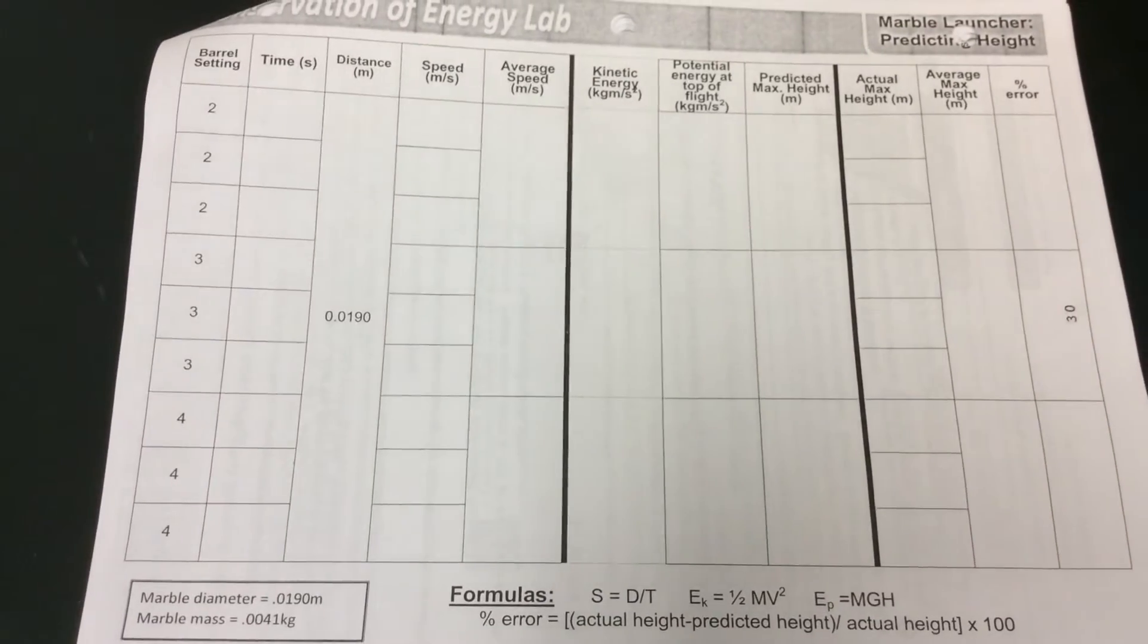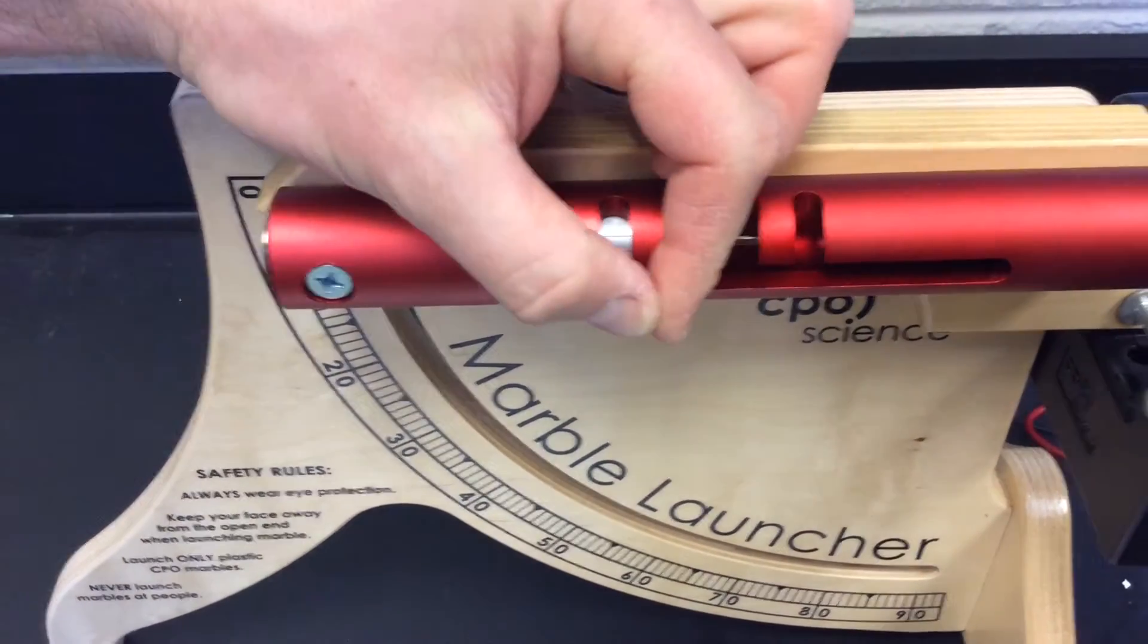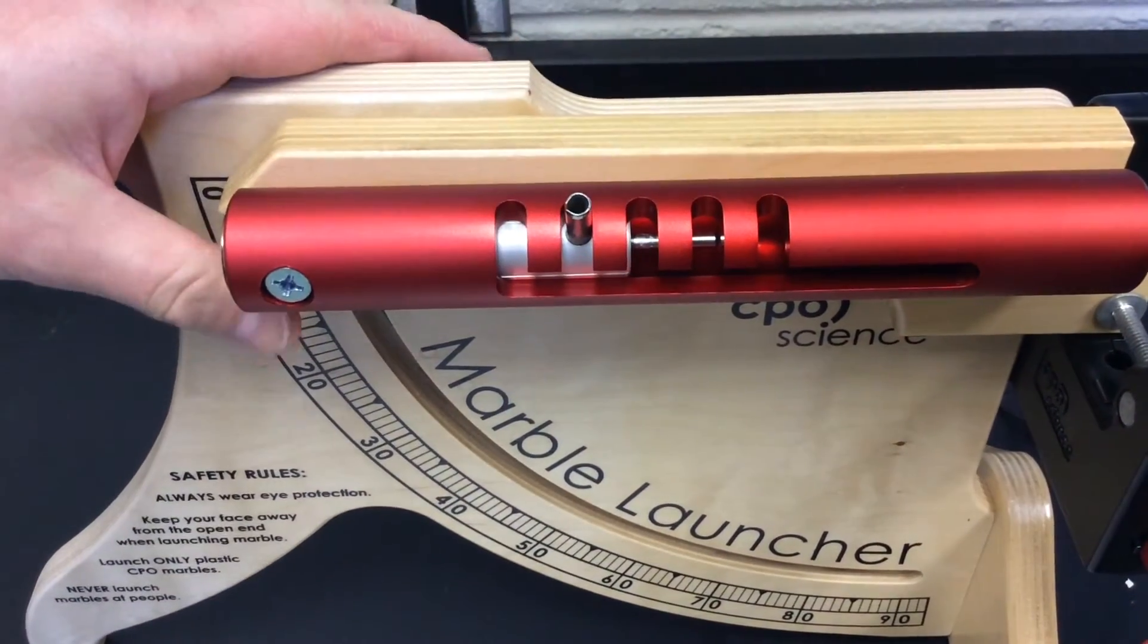And as you move up to three and four, the power of the marble launcher increases because you're depressing the spring inside more each time.